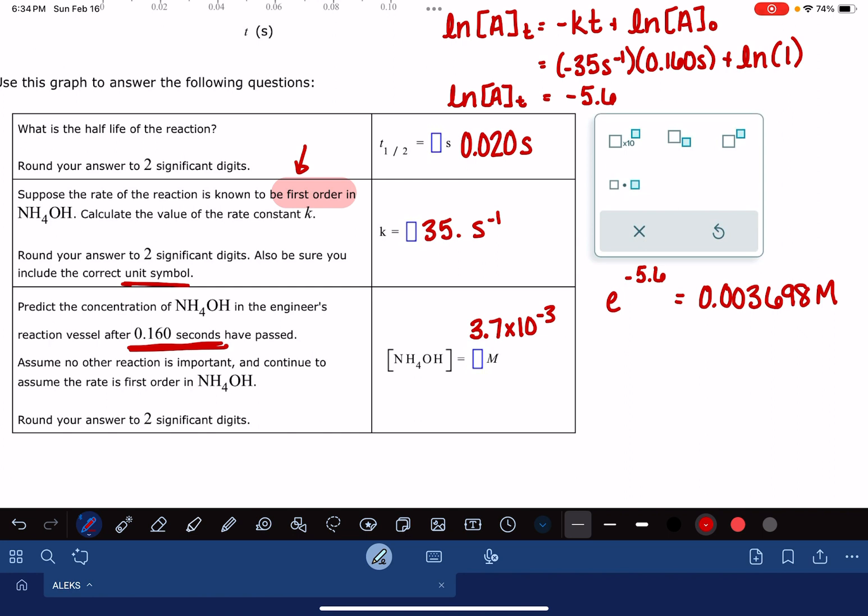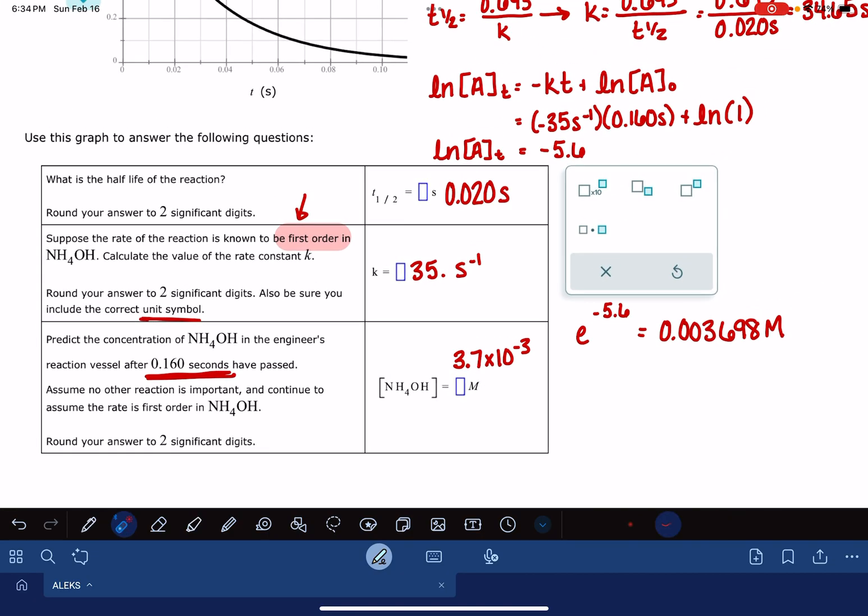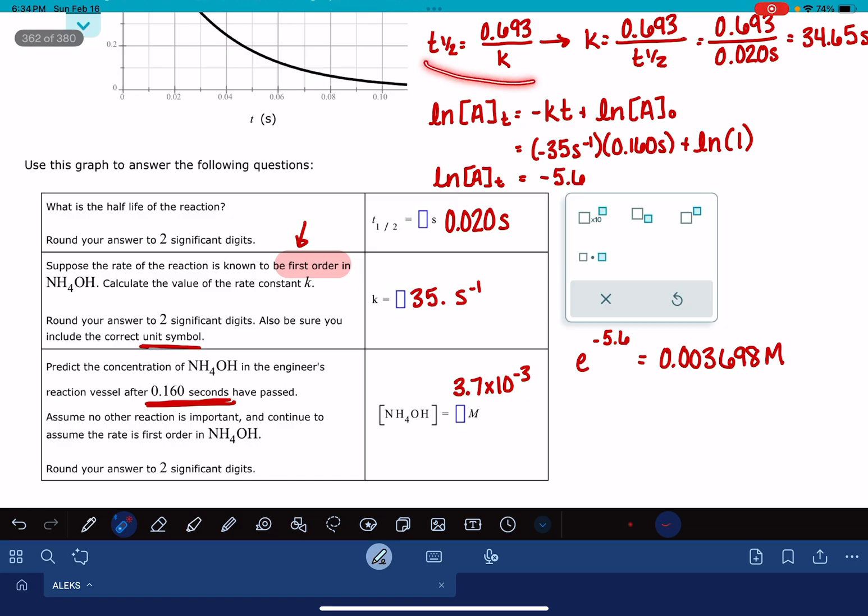Now, again, if for some reason you got a different order of reaction, for example, if you got a second order reaction, which I don't think is likely, you would want to make sure that you use the correct half-life equation and use the correct integrated rate law. But pretty sure that they're all first order.